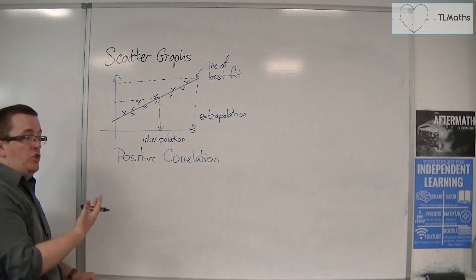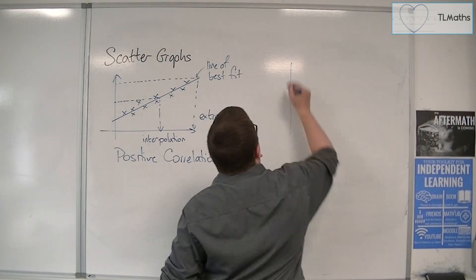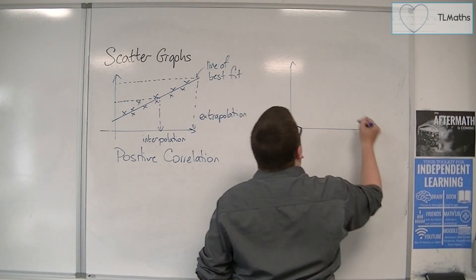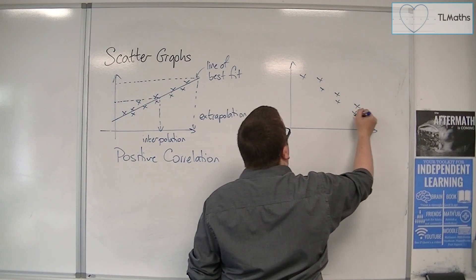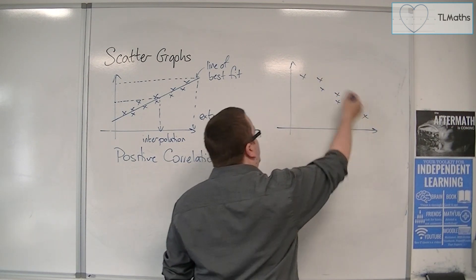Now, because you can have positive correlation, you can also have negative correlation. So negative correlation would be going in this direction. Still going in a relatively straight line.